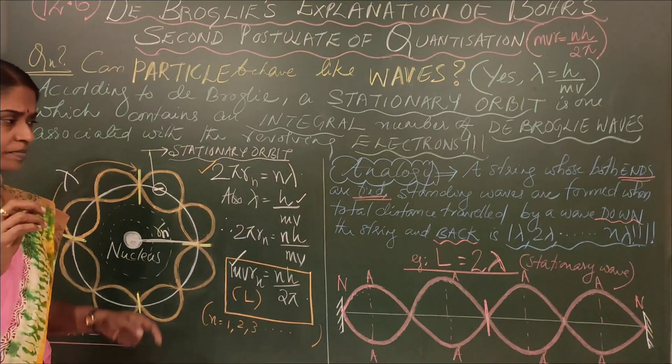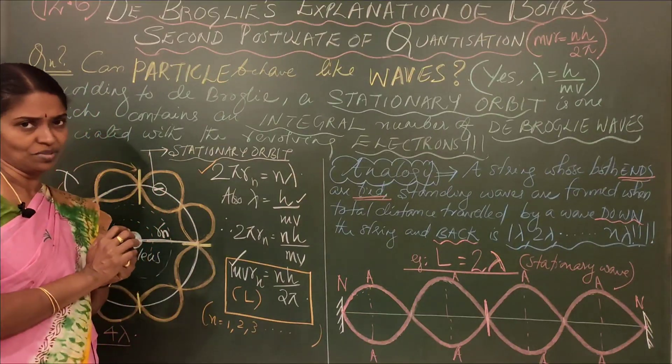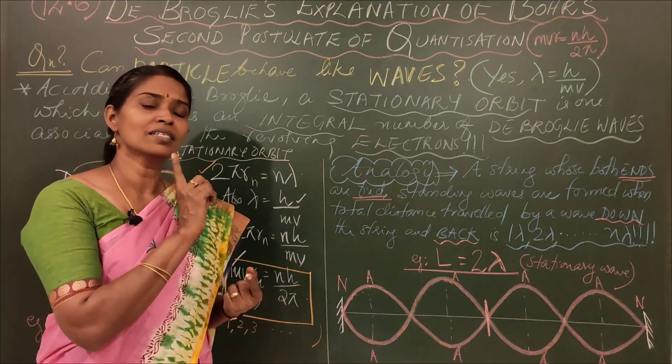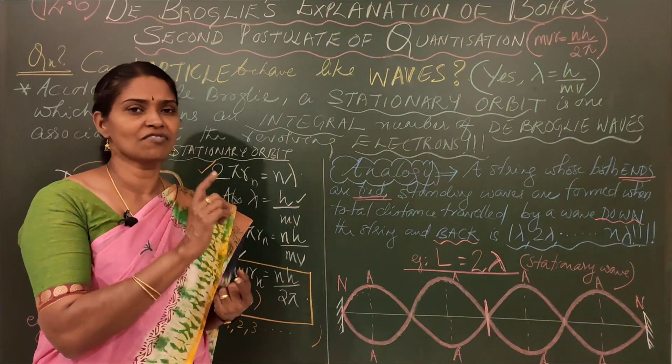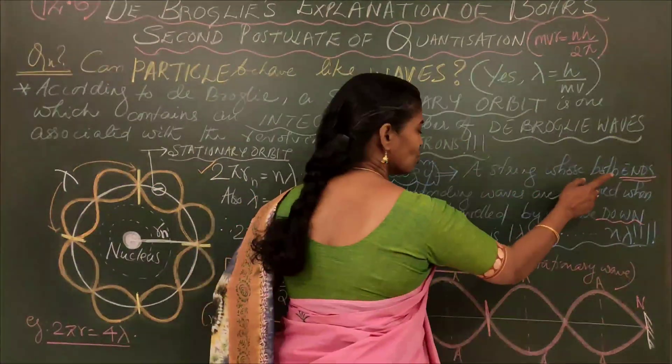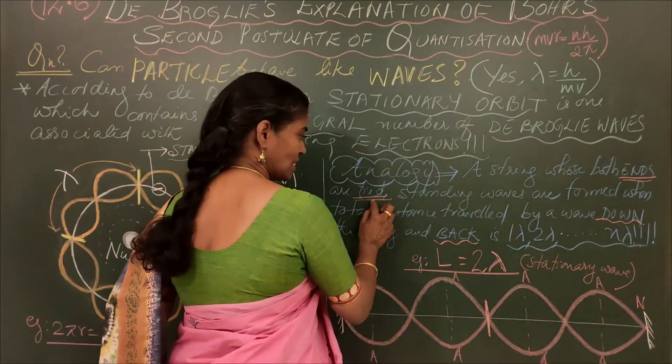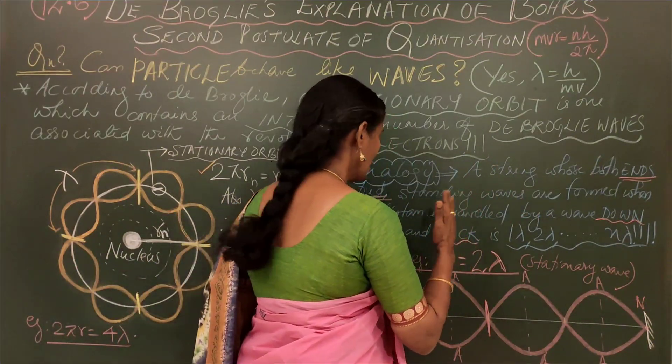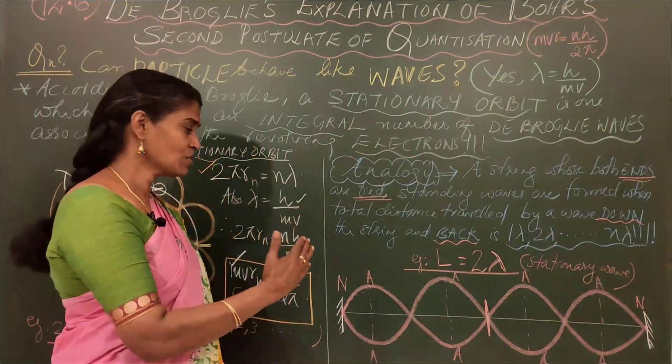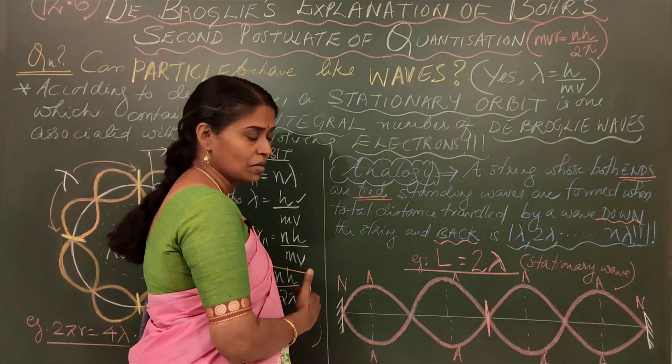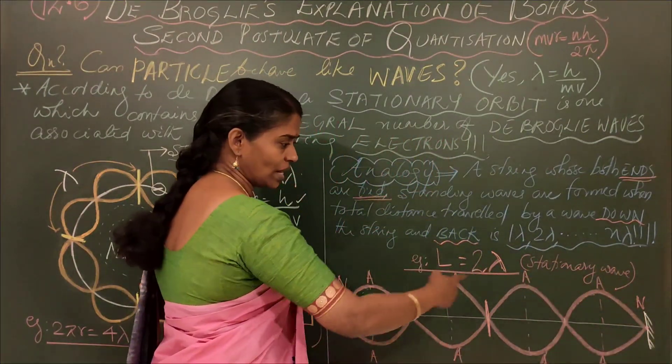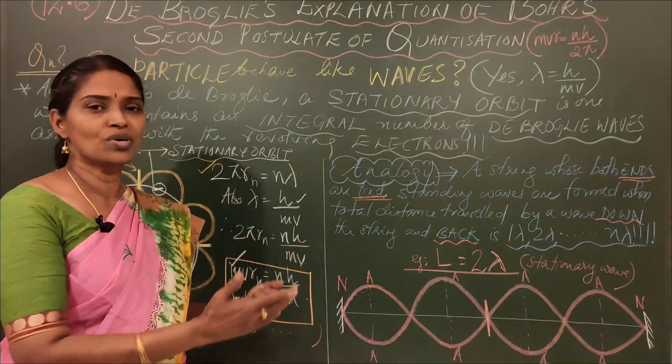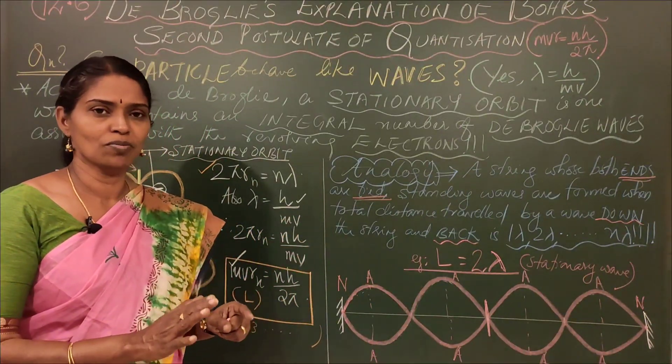Now this could be clearly understood if we think of the analogy we studied last year in lesson 15, the waves. We studied if a string whose both ends are fixed, standing waves are formed when total disturbance traveled by a wave down and back the string. The total waves filled over the length is 1λ, 2λ, etc., nλ. There again you don't have 1.5λ - that is not possible.